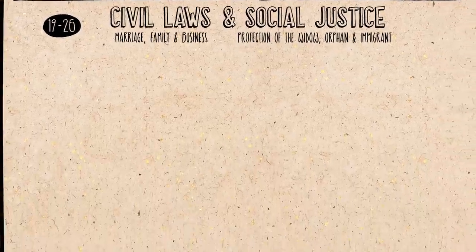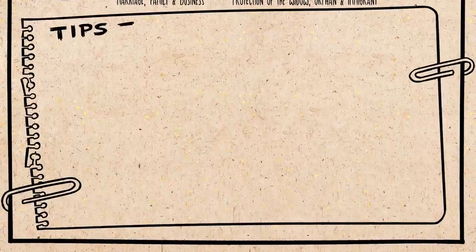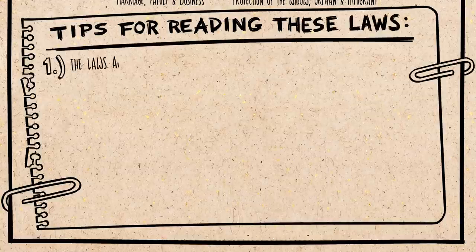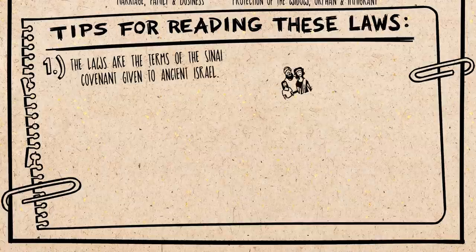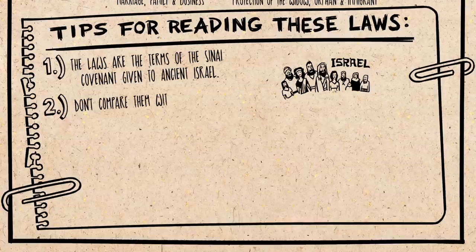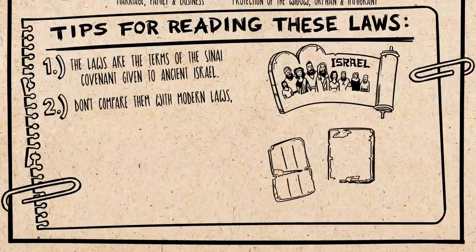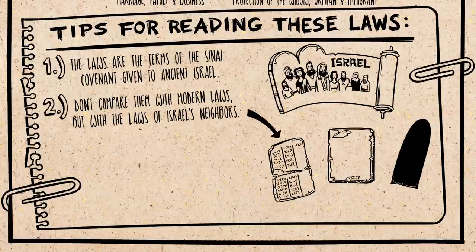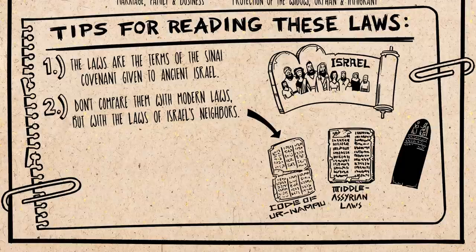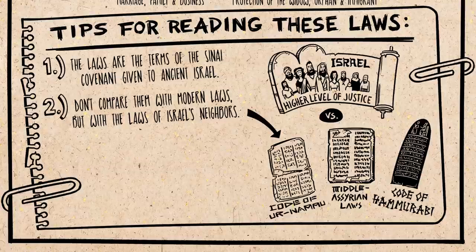These are concluded by more laws about worship. Now, here are some tips for reading all of these laws. First of all, these are the terms of the Sinai covenant given specifically to ancient Israel living in a culture that is very different from yours. So it is not going to be helpful to compare these laws with modern laws from a very different culture. Rather, these were given to set Israel apart, and so we need to compare these laws with those of Israel's neighbors, like in Assyria or Babylon. When you do that, all of a sudden laws that seemed harsh or bizarre become much more clear — you see that God is pushing Israel to a higher level of justice than was ever known before.